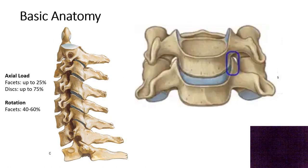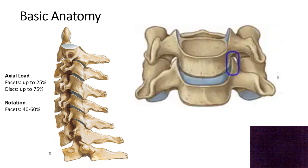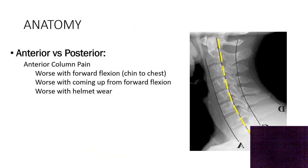One big anatomic difference between the neck and the low back is the uncovertebral joint. It's a joint that exists for about half of the vertebral bodies of the neck, largely to provide additional support because the neck has an increased range of motion compared to the low back. But because it's a joint, it can become arthritic just like any other joint, and if it becomes arthritic it starts to cause pain.